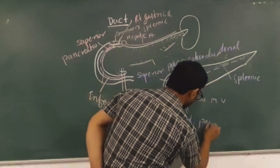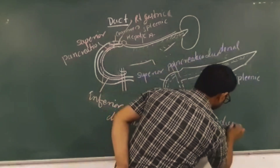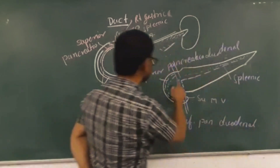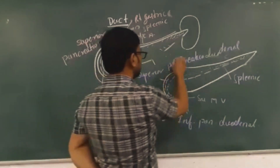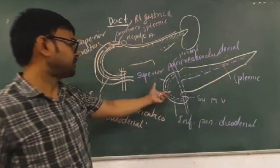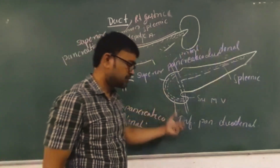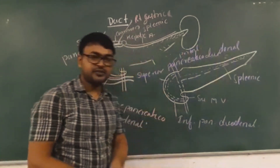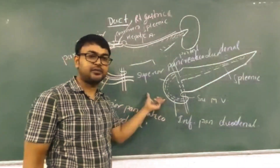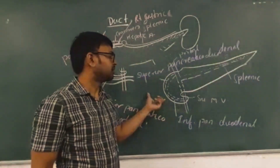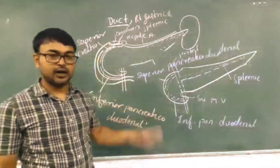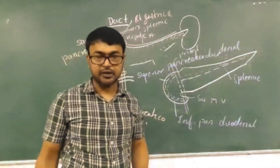The nerve supply is sympathetic and parasympathetic from the celiac plexus. This is all about the pancreas. Thank you very much.